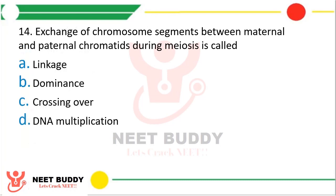Question 14: Exchange of chromosome segments between maternal and paternal chromatids during meiosis is known as? Option A: Linkage. Option B: Dominance. Option C: Crossing over. Option D: DNA multiplication. The correct answer is Option C, crossing over.